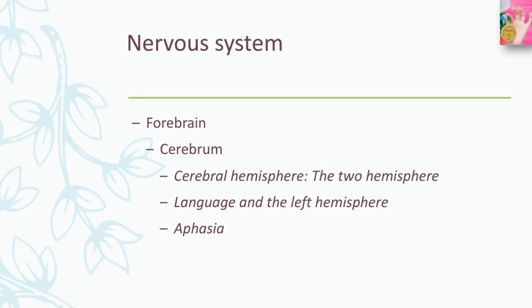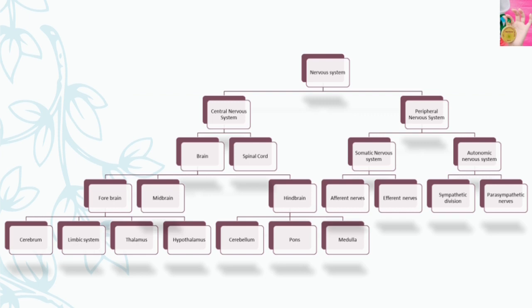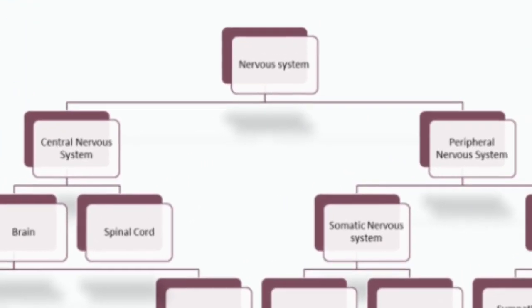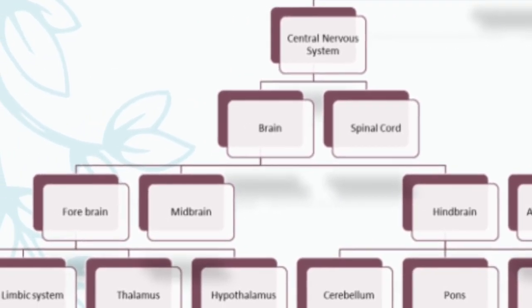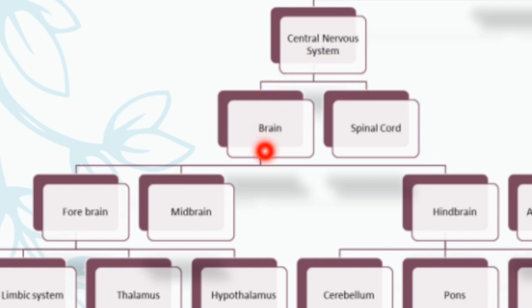This is the flow chart I have made and we are continuously discussing it. We will discuss it through to the last chapter of the nervous system. The nervous system is divided into the central nervous system and the peripheral nervous system. The central nervous system includes the brain and spinal cord. The brain has three major divisions: forebrain, midbrain, and hindbrain.